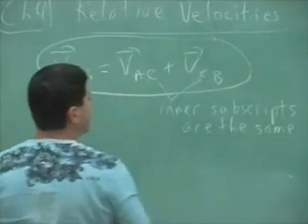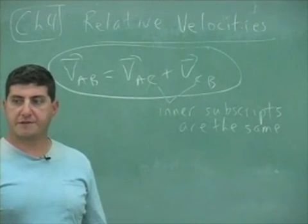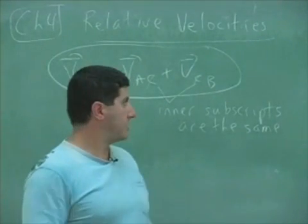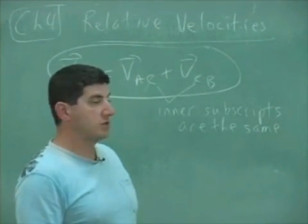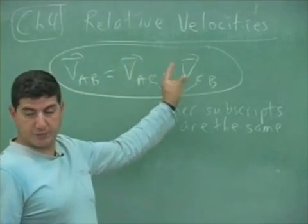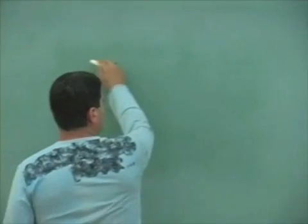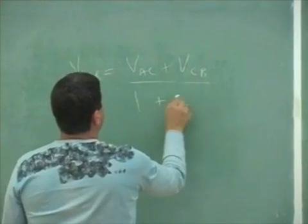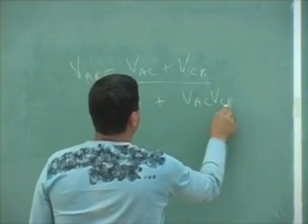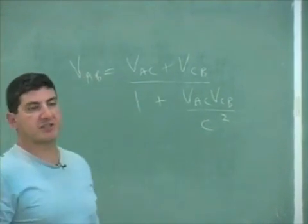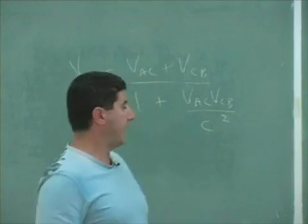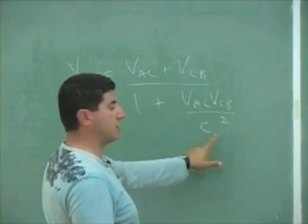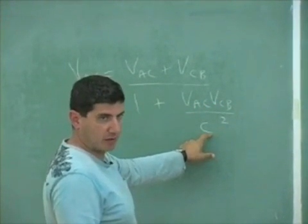Now, later on, when you go to physics 4, it's called modern physics, you'll learn about relativity. And in relativity, you will learn the relativistic formula for adding speeds. Let me give it to you now, just to whet your appetite a little bit. This is the relativistic way of adding speeds. You have the velocity of A with respect to C, VCB, divided by 1 plus VAC, VCB, divided by speed of light squared.